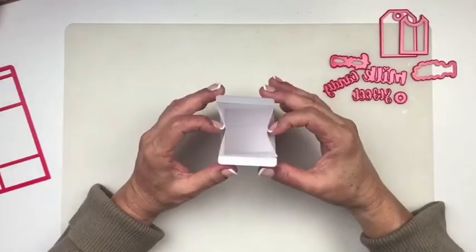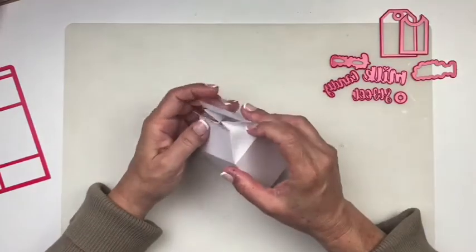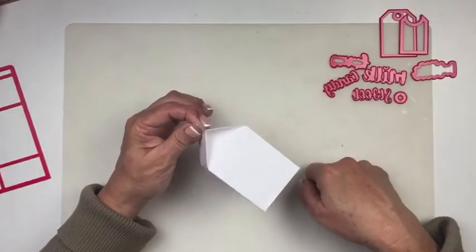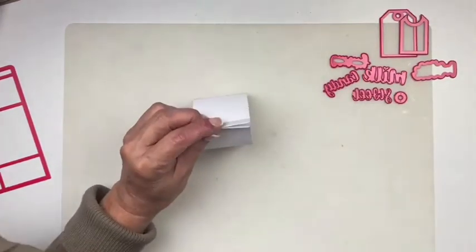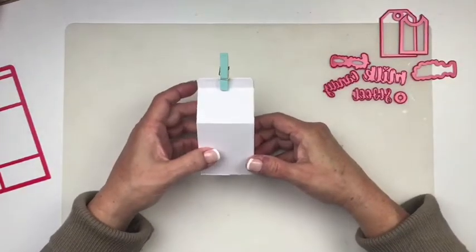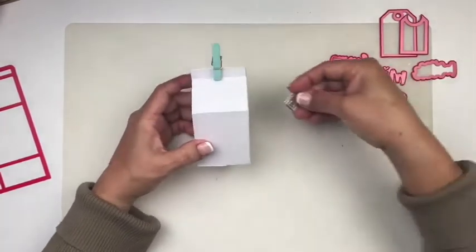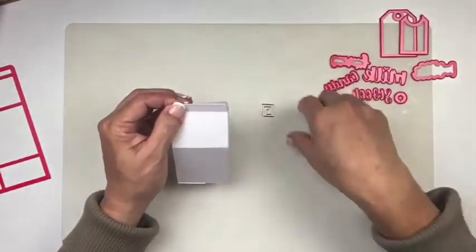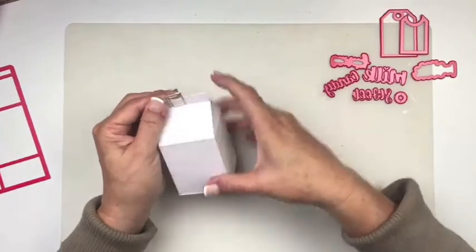So we're almost done. Now if you push that in you will see you have your milk carton right there. And like I said, you can close it with a little clothespin. You could do it with a little square paper clip, a little decorative paper clip that you can hold it together that way if you want.